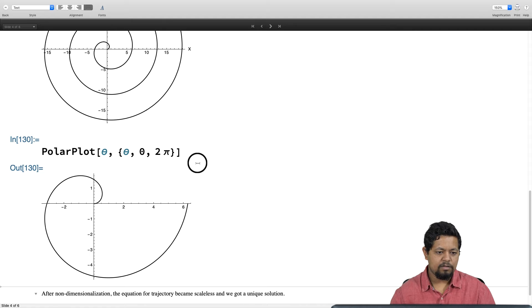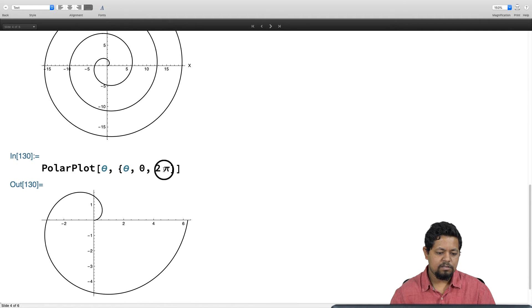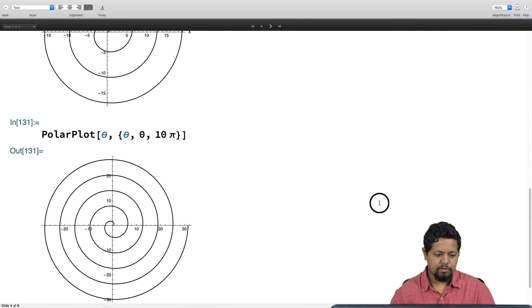I got an outward spiral just like before, but since I want to cover a few circles, I should make this maybe 10 pi, and there we go.